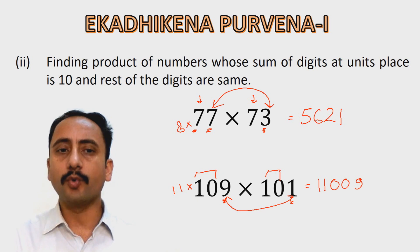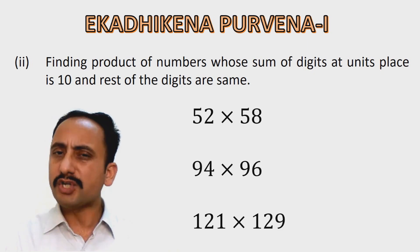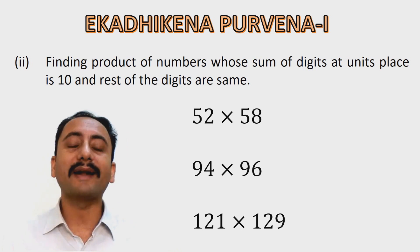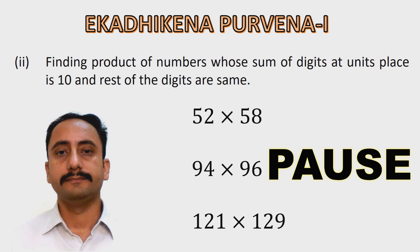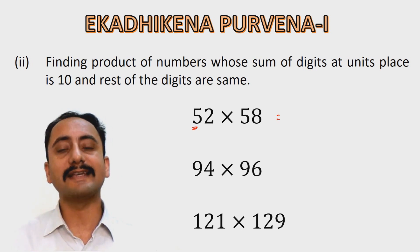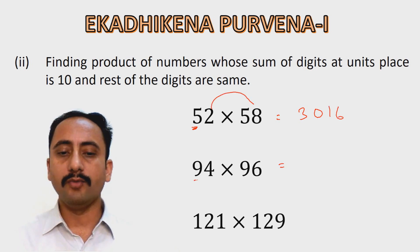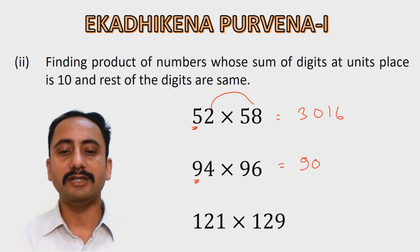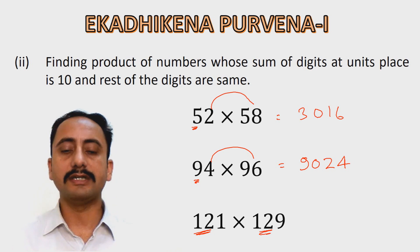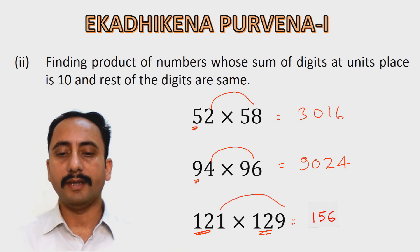Try the next three examples yourself — pause and practice. Let's verify. For 58 multiplied by 52: one more than 5 is 6, and 6 into 5 is 30; product of 8 and 2 is 16, giving 3,016. For 96 multiplied by 94: one more than 9 is 10, and 10 multiplied by 9 is 90; 6 into 4 is 24, giving 9,024. For 129 multiplied by 121: one more than 12 is 13, and 13 multiplied by 12 is 156; 9 multiplied by 1 is 09, giving 15,609.